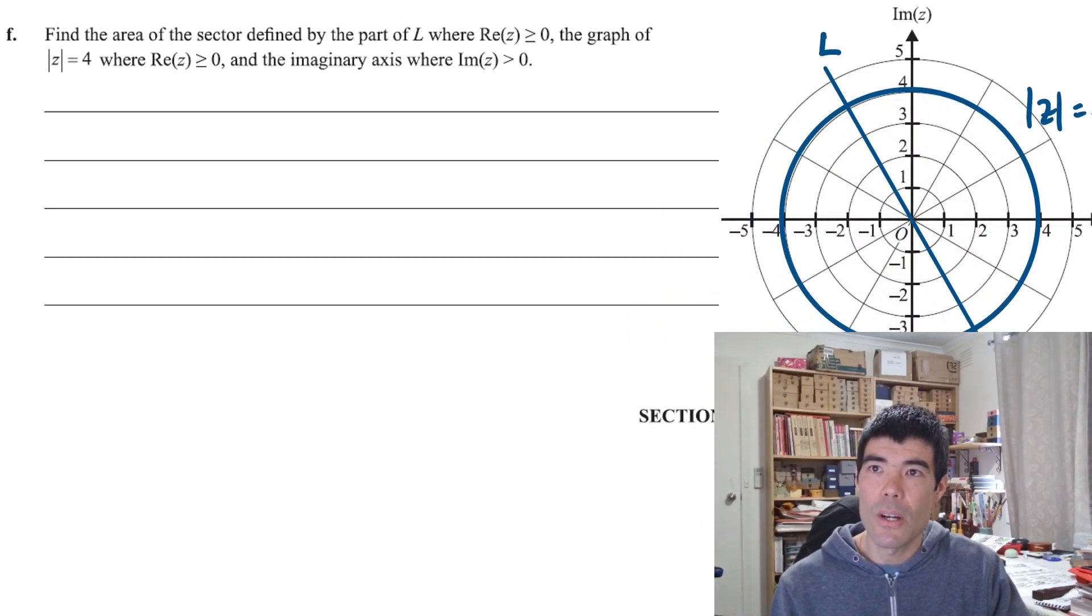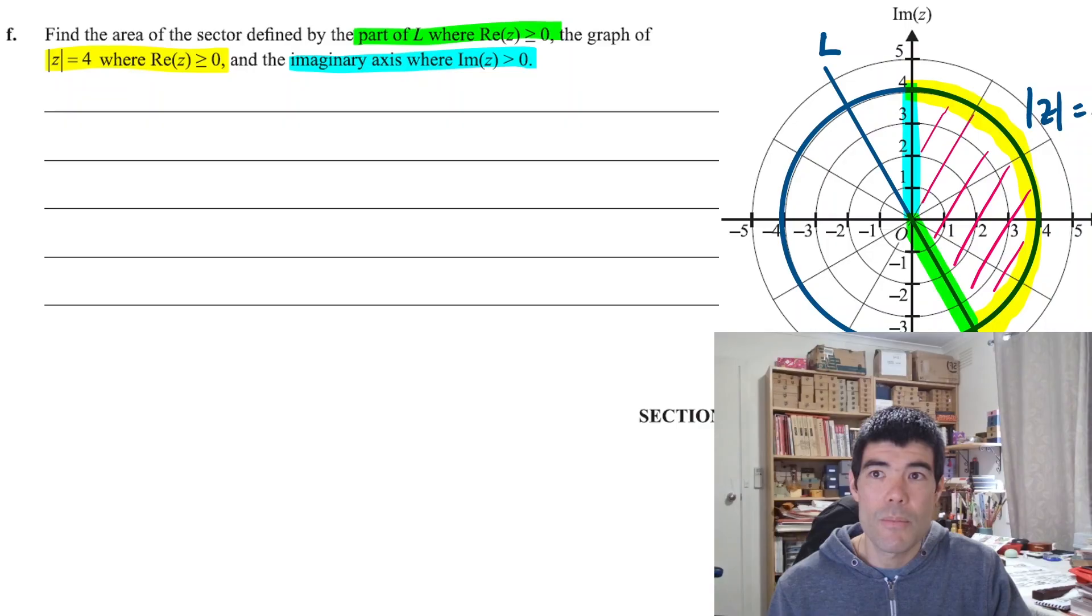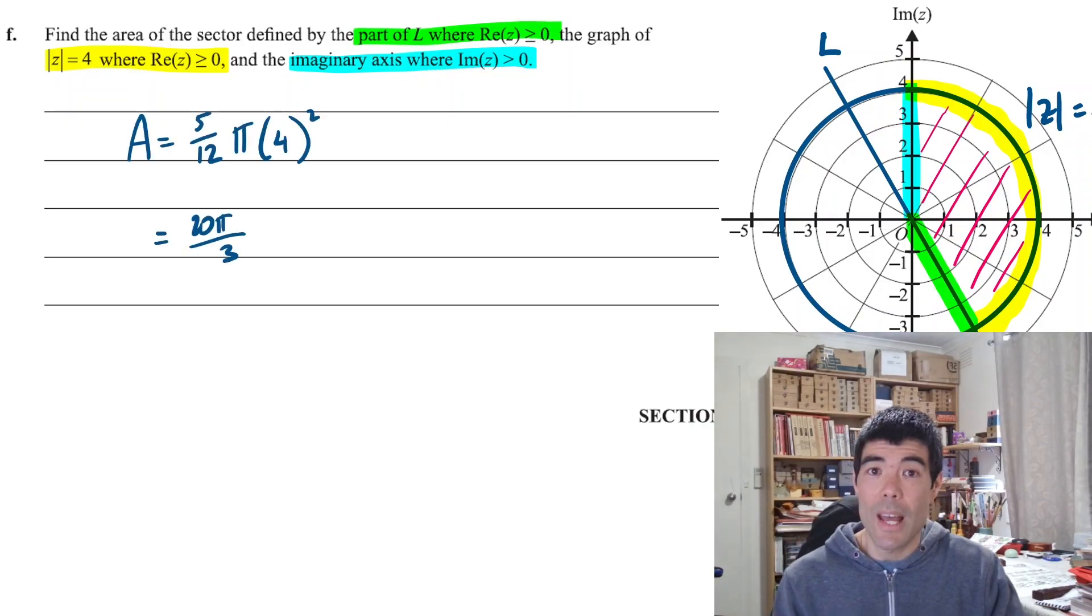And part f is the area of the sector. So we just need to read the question carefully, make sure we get the right area. So we have the part of L where Re(z) ≥ 0. The graph of the circle where again, the real part is greater than or equal to 0. And the imaginary axis where the imaginary part is greater than 0. So we're looking for this area here. So it's going to be a fraction of a circle. To find what fraction, we could use the total angle divided by 2π. Here, if we've drawn it accurately, we can just count the slices. So we've got like 5 pizza slices out of 12. So it's 5/12 of the circle.